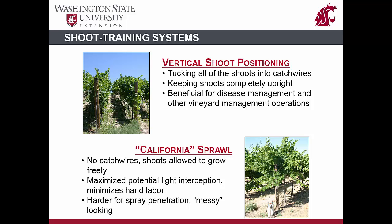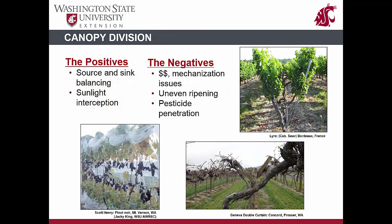In Washington, modified VSP systems are the most common in larger commercial operations, and strict VSP systems are more common in smaller operations. In addition to the basic forms of shoot training, there are also different ways to divide the canopy within the confines of a trellis system. Dividing a canopy is one way to increase the number of shoots per linear foot of row. Canopy division is a good way to manage overly vigorous vines and to capture more sunlight. Unfortunately, retrofitting a single canopy vineyard to a divided canopy can be expensive and can result in uneven ripening, challenges in disease management, and mechanization issues. However, if you have a smaller operation and are struggling with controlling vine vigor, you may want to consider canopy division.